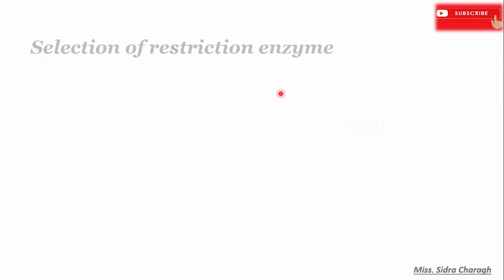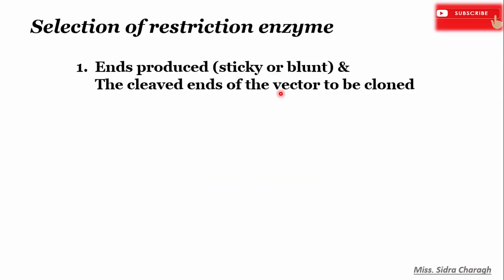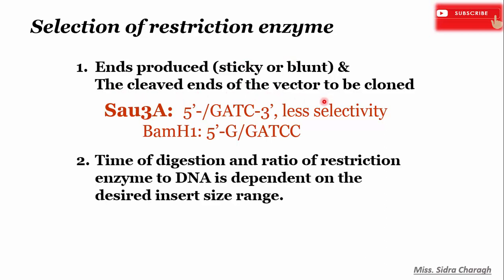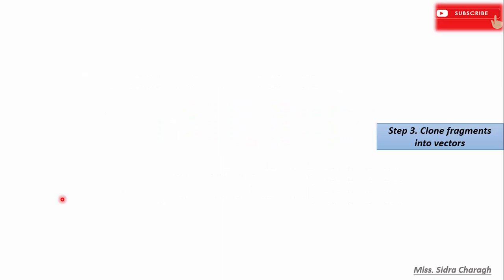The question is which restriction enzyme we will select. We select restriction enzymes that produce either sticky ends or blunt ends that match the cleaved ends of the vector to be cloned. The time of digestion and ratio of restriction enzyme to DNA is always dependent on the desired insert size range.